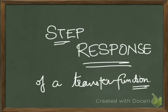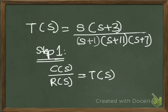In this example we'll be taking a transfer function with a second order numerator. The first step is to write down the given transfer function. In our case it is T(s) = s(s+3) / [(s+1)(s+11)(s+7)].